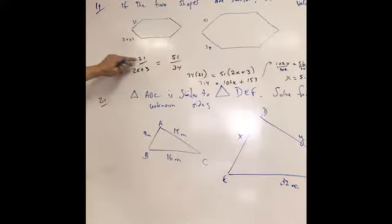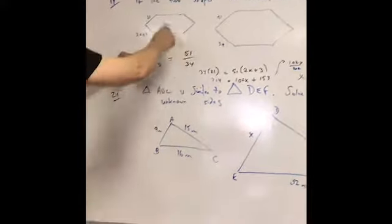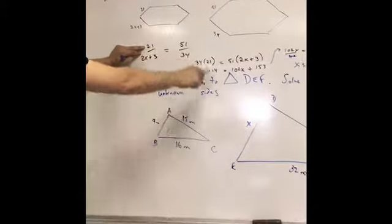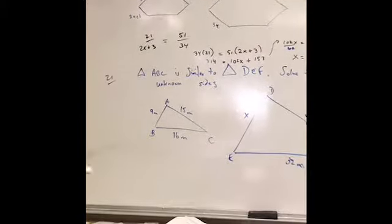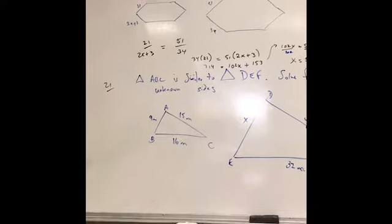The key to this is that the 21 and 51 are on top, and the 2X plus 3 and 34 on the bottom. That preserves the ratio, the factor, the scale factor in the ratio.